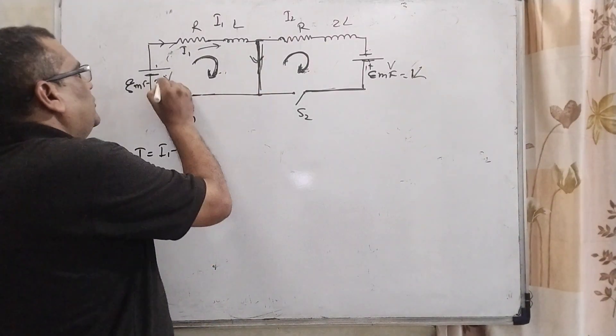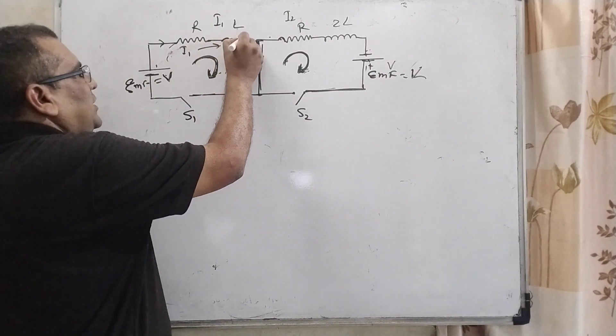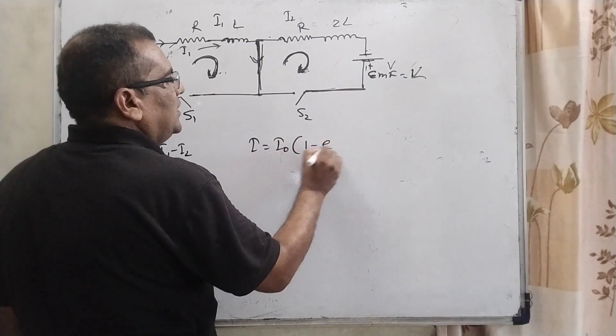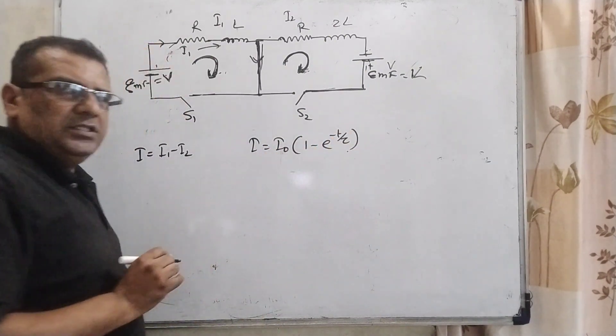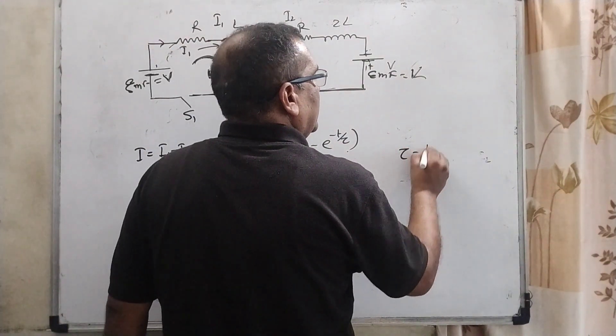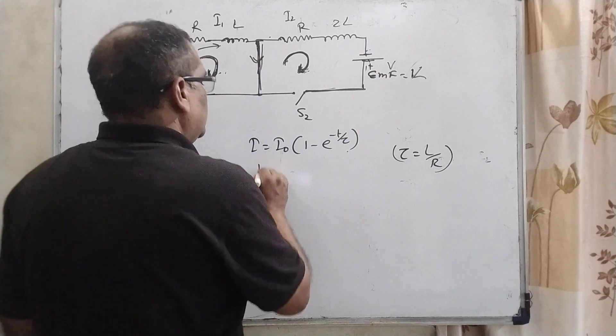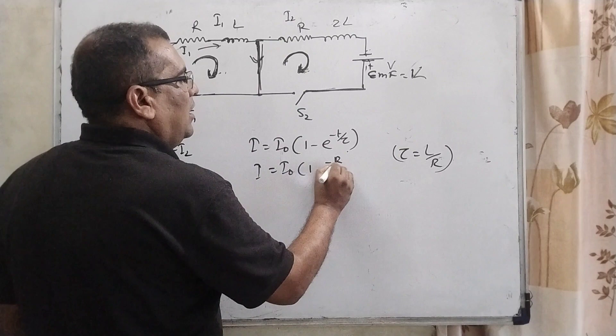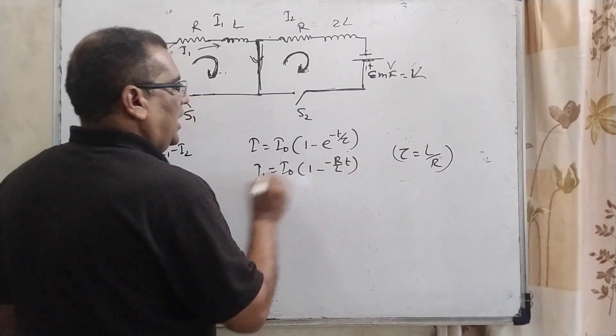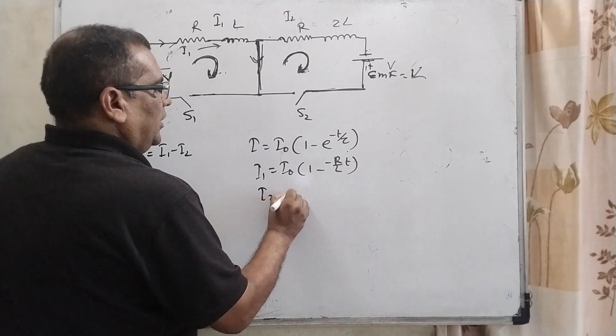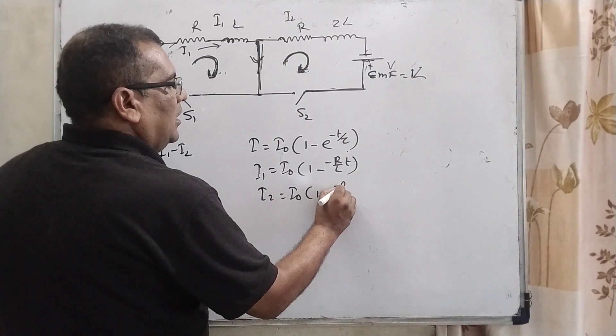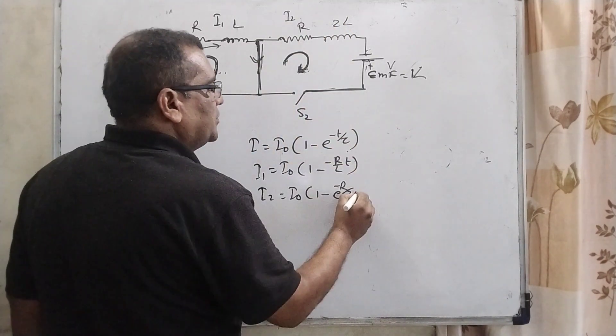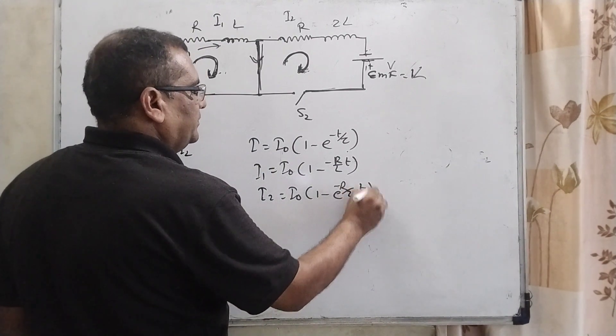Now, whenever we have to charging the batteries, that time inductance gradually charges. That time we have using I equal to I naught 1 minus E raised to power minus T by tau. Tau is time constant and its value is L by R. Therefore, I1 equal to I0 1 minus E raised to power minus R by L T. And for the I2 equal to I0 1 minus E raised to power minus R by 2L, because 2L that inductance in second loop.